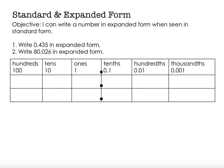So number one says write 435 thousandths, that's the thousandths place, in expanded form. So this is in standard form. What's that called? Yes, standard form. And we want to expand it.